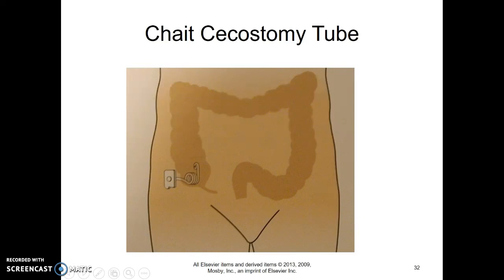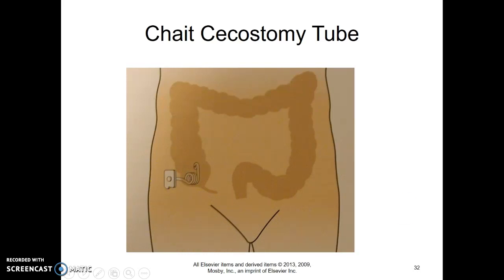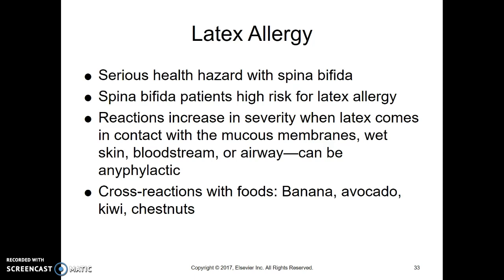This is called a CHAPE. Another procedure done at Children's Hospital is a Malone, which uses the appendix brought up to the surface — either way the goal is antegrade enema delivery. The child figures out their own routine — how much fluid they need and when — and gets on a consistent bowel program.